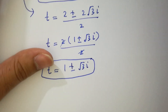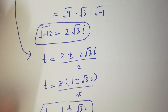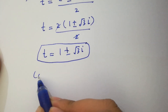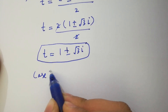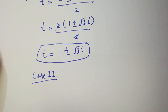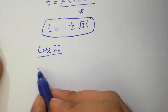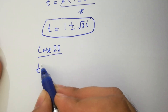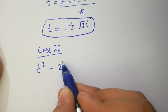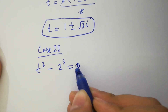Now I am going to move to the second case, which is t cubed minus 2 cubed equal to 0.